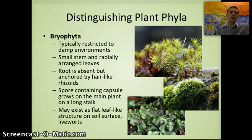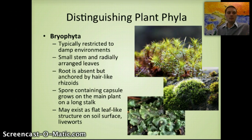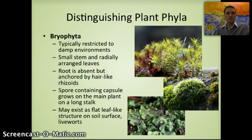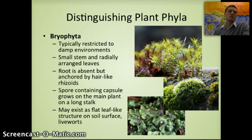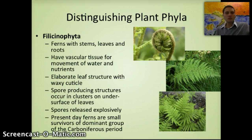The first plant phylum is Bryophyta, usually restricted to damp and moist environments. They have very small stems with radially arranged leaves, no true root structure, and are anchored by hair-like fibers. They produce spore-containing capsule growths on the main stalk and have very flat leaf structure — simple plants that don't grow large. Examples include mosses, hornworts, and liverworts. While some have structures to help transport water, they lack a true vascular system.